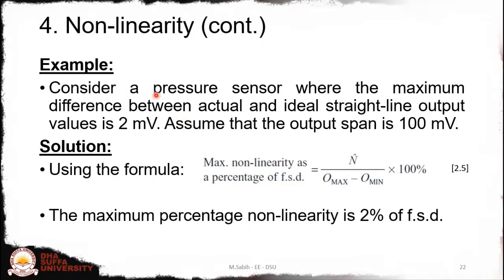Here is an example: consider a pressure sensor where the maximum difference between the actual and ideal straight-line output values is 2 millivolts. So n-hat is 2 millivolts, and the output span (O_max minus O_min) is 100 millivolts. Applying the formula, we arrive at a maximum percent nonlinearity of 2%.